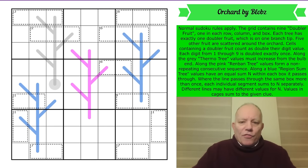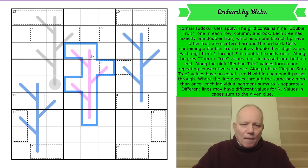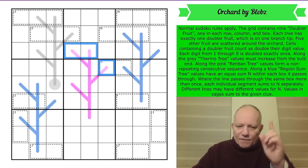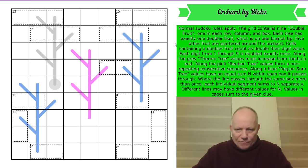Along the grey thermo tree, values must increase from the bulb end as we go up to any tip. That's normal enough. On the pink Renban tree, values - oh it was values in the thermo one as well - values form a non-repeating consecutive sequence. So there is a doubler of course on one of these tips. Interesting. But it's the values, not the digits, that form the sequence.